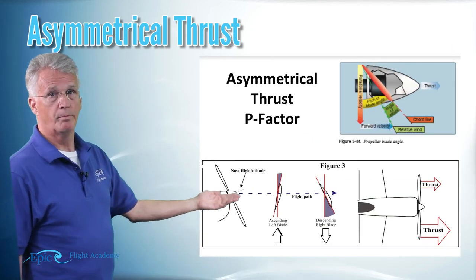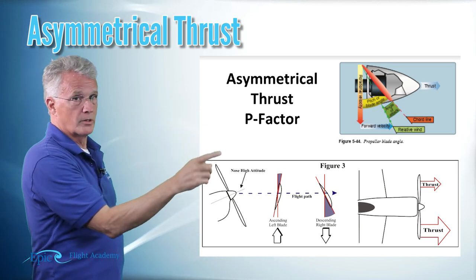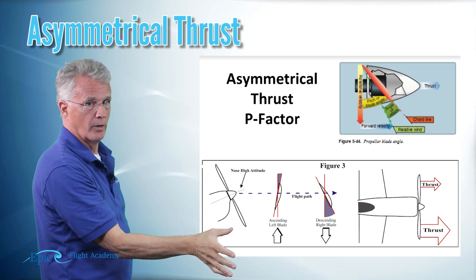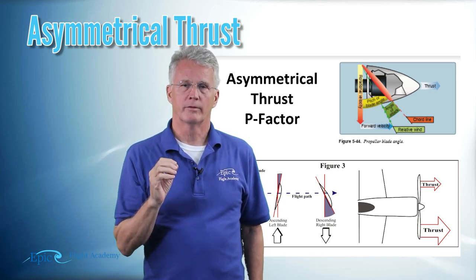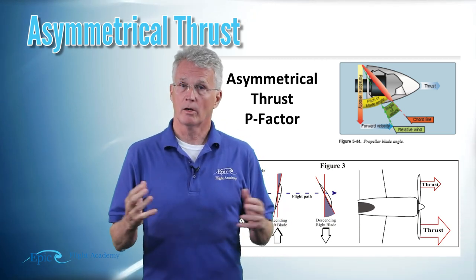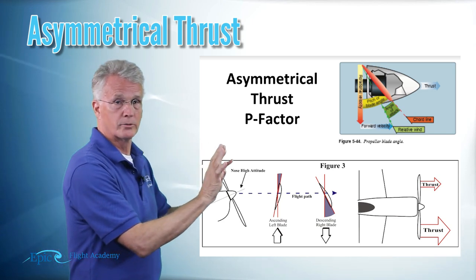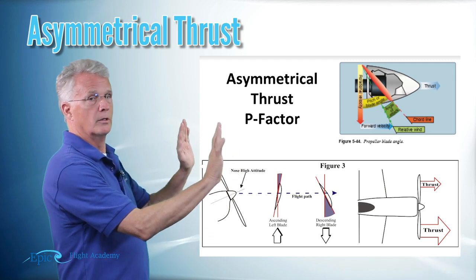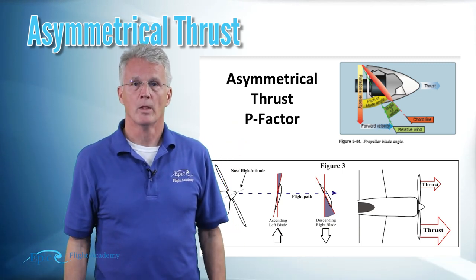When we pitch the nose of the aircraft up, as in a climb, the descending blade on the right side of the disc — again, from my view in the cockpit it's turning clockwise — that descending blade on the right side hits the relative wind at a larger angle of attack. Remember from our earlier discussions in aerodynamics: larger angle of attack means more lift. With the propeller, larger angle of attack means more thrust. So in a climb we get more thrust from the right side of the propeller disc, which pulls the aircraft to the left. Those are our first two turning tendencies.